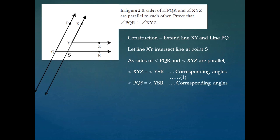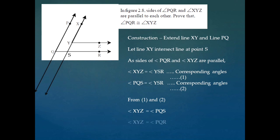Similarly, line PQ is parallel to line XS, and if QR is their transversal, then angle PQS is congruent with angle YSR — we call this equation number 2. From equations 1 and 2, the right hand sides are the same, so the left hand sides must be equal: angle XYZ is congruent to angle PQS, which is also written as angle PQR. Therefore angle XYZ is congruent to angle PQR, which is what we wanted to prove.